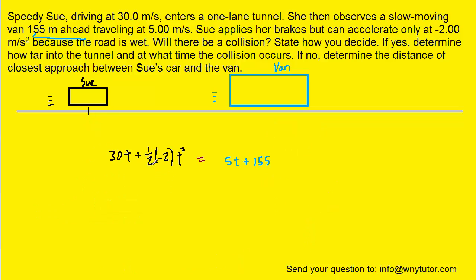We could simplify this a little bit. 1 half times negative 2 is negative 1. And we do have a quadratic equation because we have a t squared as well as a t. So that means we have to gather all the terms over to one side so that the other side is equal to 0. A little bit of algebra here. So we're going to add 1t squared to both sides of the equation. And in addition, we'll subtract 30t from both sides of the equation. Note that the 5t minus 30t will become a minus 25t. The left side will become 0.